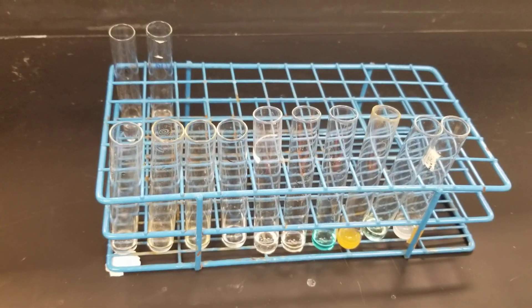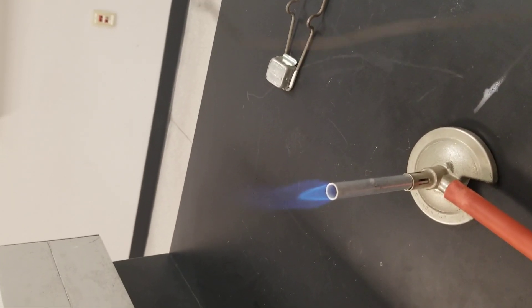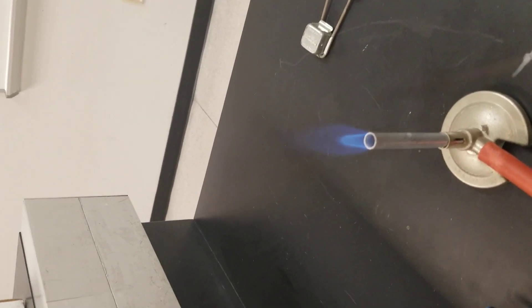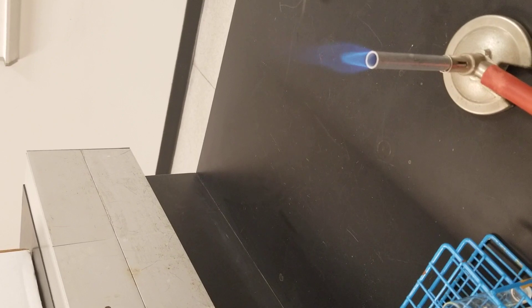This is the flame test wire with the loop. We have to make sure the flame test wire is clean before starting the experiment or before recording the color of the metal.